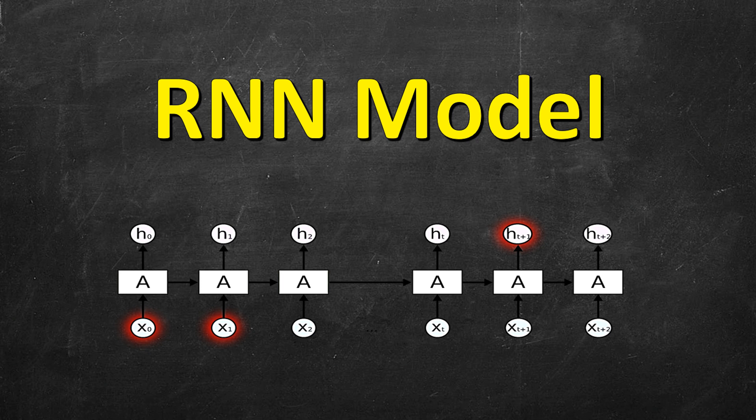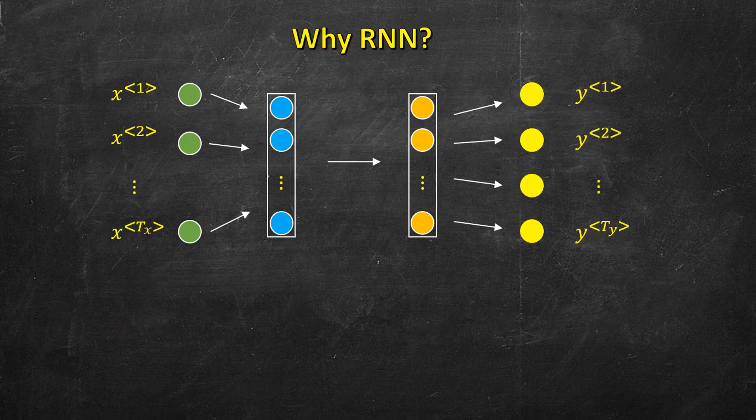In this lesson we will study about the recurrent neural network model. The first question is: why do we need an RNN? Why do we need a separate model? Why cannot we do away with a simple neural network? Let's say we have a task of named entity recognition where we are given a sentence in English.